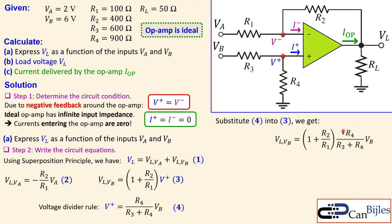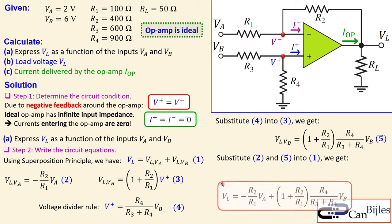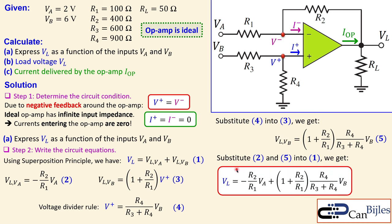Substituting equation four into the non-inverting gain expression gives the full contribution of Vb to the load voltage — the non-inverting gain times the attenuation factor times Vb. This is equation number five. Substituting equations two and five into equation one gives the general expression for VL. This is a difference amplifier because the output is a scaled difference between the two input voltages: a constant Kb times Vb minus Ka times Va. If all resistors are chosen to give unit gain, the output is simply Vb minus Va.